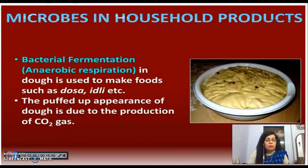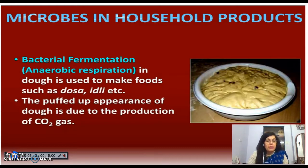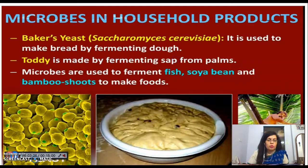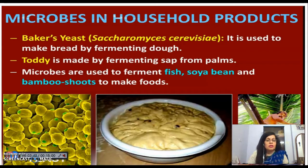Dough or atta is used for baking and is also used in making idli. It is used to make bread by fermenting dough. Toddy is also made by fermenting sap from palms. Microbes are also used to ferment fish, soya bean, and bamboo shoots to make foods.